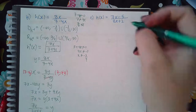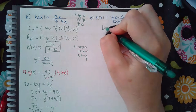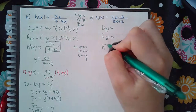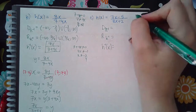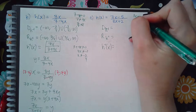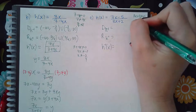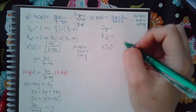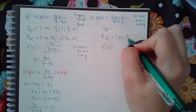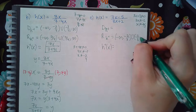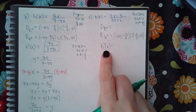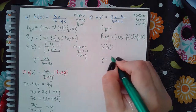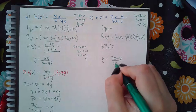Now for the last example. Again, I want to find the domain of h inverse, the range of h inverse, and h inverse itself. The range is the one I can do right away because it's the same as the domain of h. The denominator cannot equal zero, which means x cannot equal negative 2 thirds. So the range is negative infinity to negative 2 thirds, and then negative 2 thirds to infinity. Now let's find h inverse — y equals 7x minus 5 over 3x plus 2.